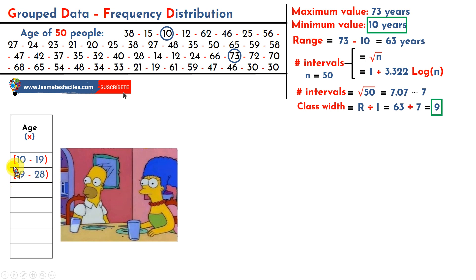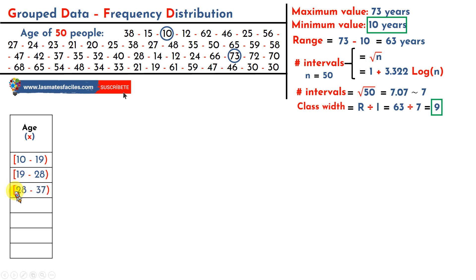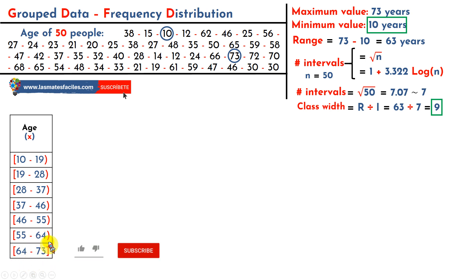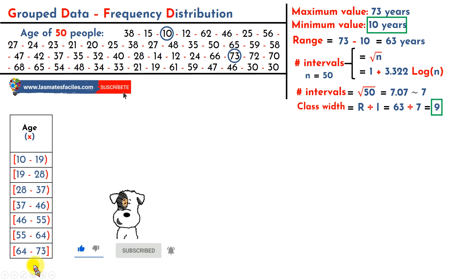Those who are 19 years old will be counted in the next interval, which includes those from 19 to less than 28 years old. The next interval goes from 28 to 37, and so on — I keep adding 9 each time until the end. The last interval must include the maximum value of 73 years old, and that is where we finish. Here we use a bracket at the end to count those who are 73 years old.